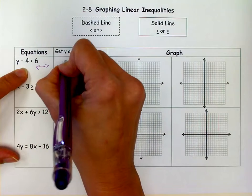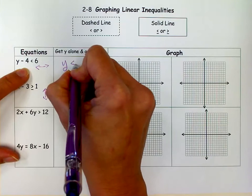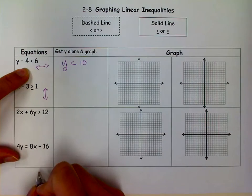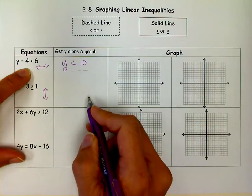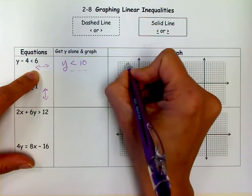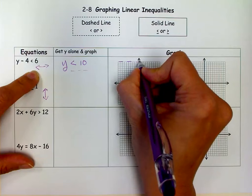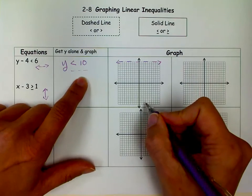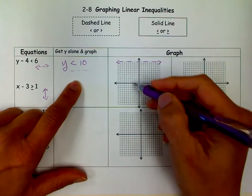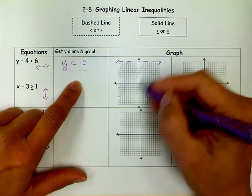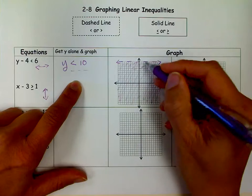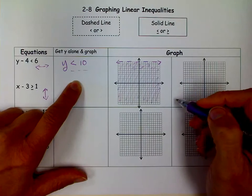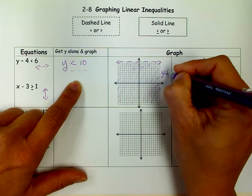You want to get Y alone. To get Y alone, you add 4 to both sides, so you get Y is less than 10. That's going to be a dashed line, so I'm going to go up 10 on my Y and make a little dashed line. It says that Y is less than 10. When it's just a Y or an X, it's pretty obvious which way to shade, because this way is less than 10. Up there is greater than 10.